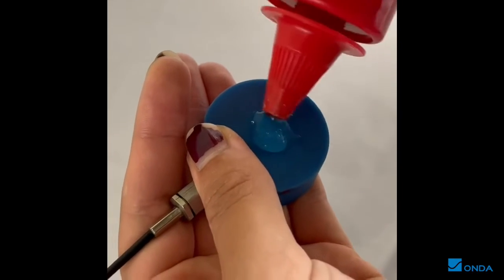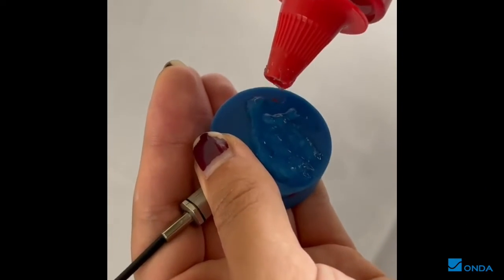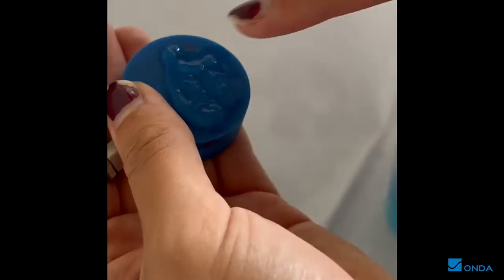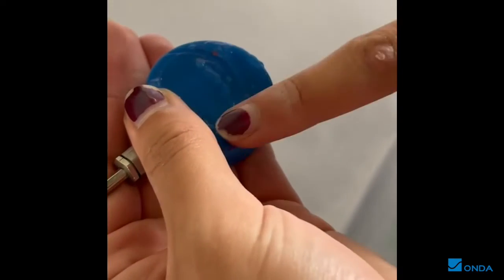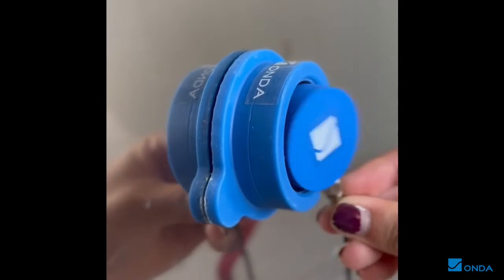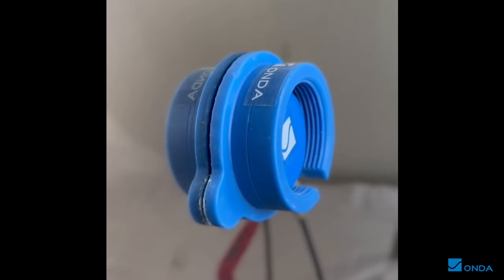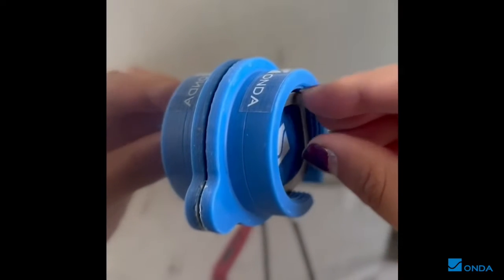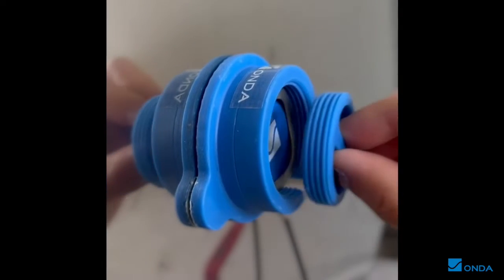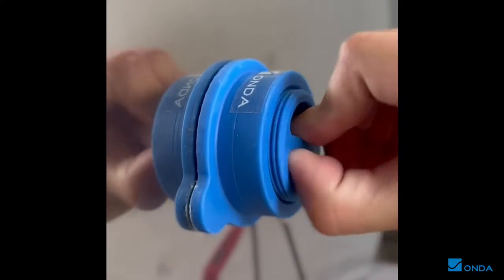Apply the coupling agent onto the face of the sensor and spread evenly. Place the sensor, spring, and locking piece into the housing. The locking piece should be securely tightened by hand.